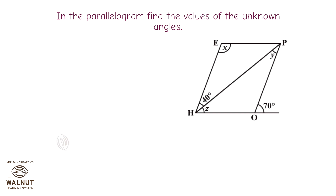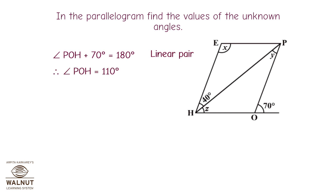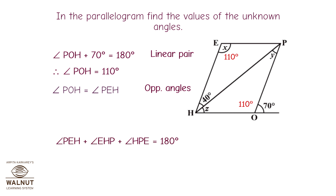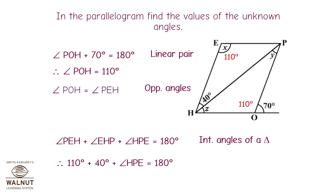Take a look at the parallelogram and find the values of the unknown angles. Angle POH + 70° = 180° as these are a linear pair of angles. Therefore angle POH = 110°. Angle POH equals angle PEH because they are opposite angles. Angle POH + angle EHP + angle HPE = 180° since these are the internal angles of a triangle. So 110° + 40° + angle HPE = 180°, giving angle HPE = 30°.